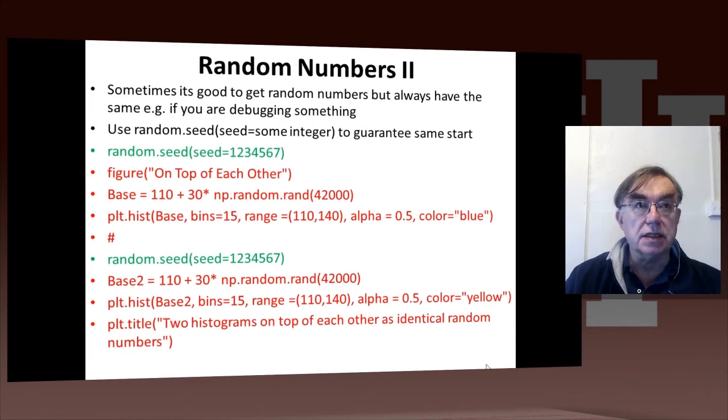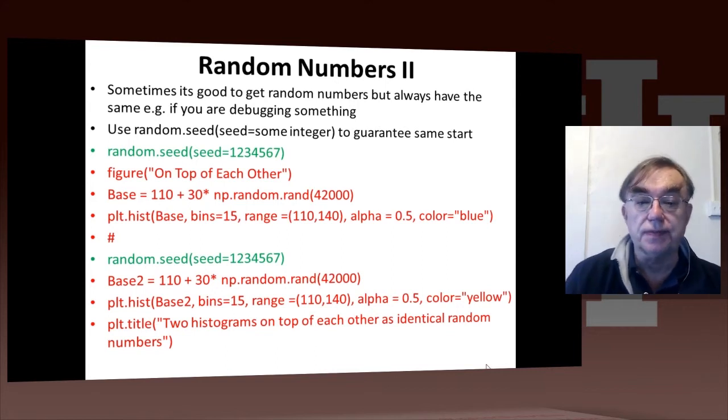Now let's discuss this issue of the seed. The way in Python you actually set a seed is using the command random.seed, and then it has an argument called seed which you set to be your favorite integer. That will always start at that integer.